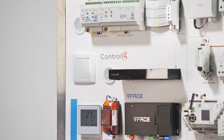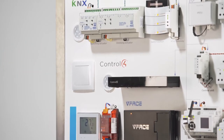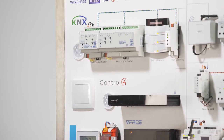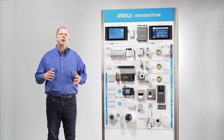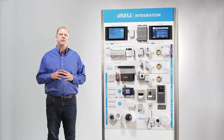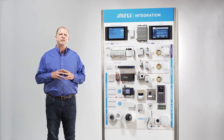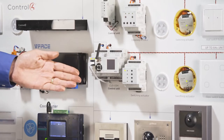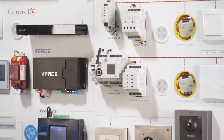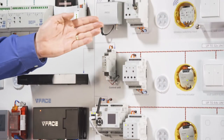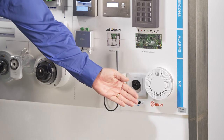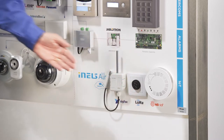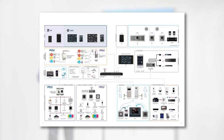This is demonstrated on selected examples, for instance multimedia by Control4, or switch control by ABB based on KNX protocol. The key part of the installation is a computer network used by the central unit CU3, gateway ELAN RF, or by iNELS air sensors, transmitting data over TCP/IP protocol.